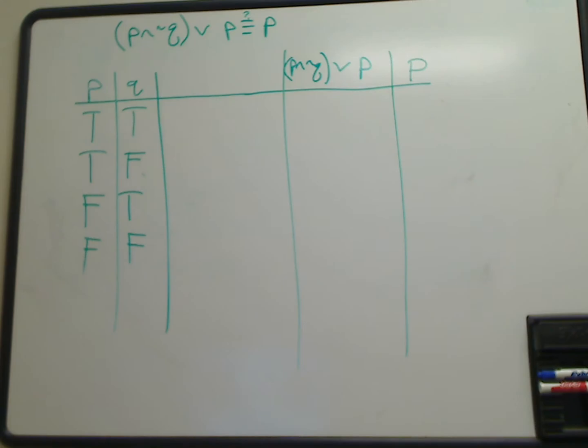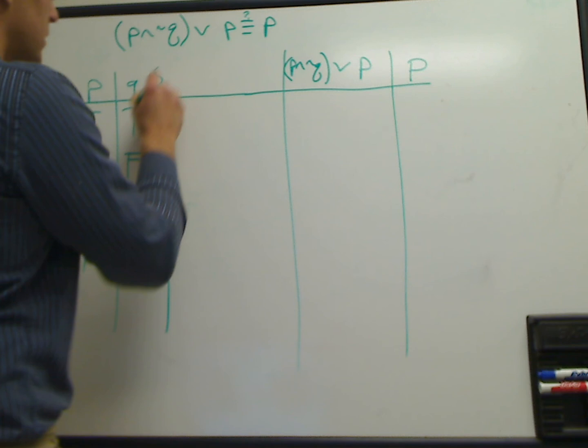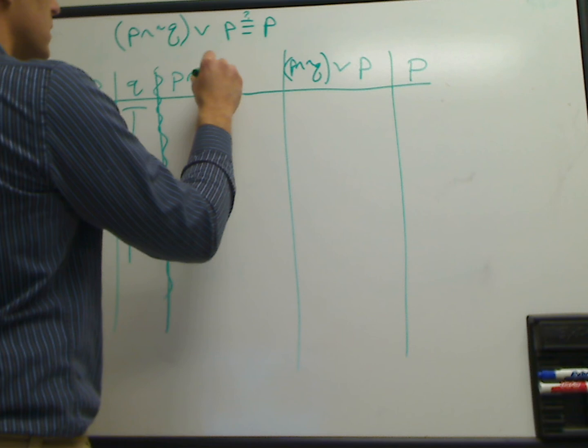As I've shown in class, the easiest way to fill out this truth table is to use a few helper columns here. We'll make this the thick row. So let's have our first one be P and not Q. And then I guess that should be all we need.